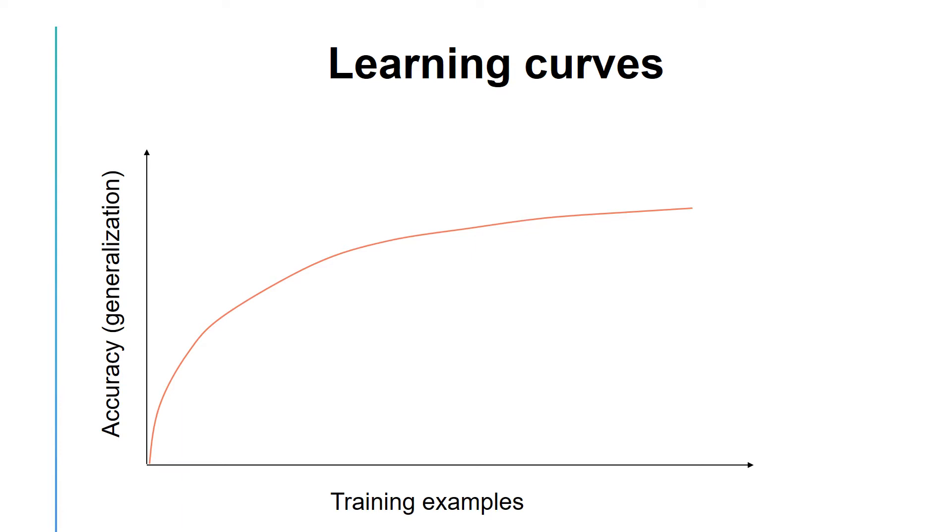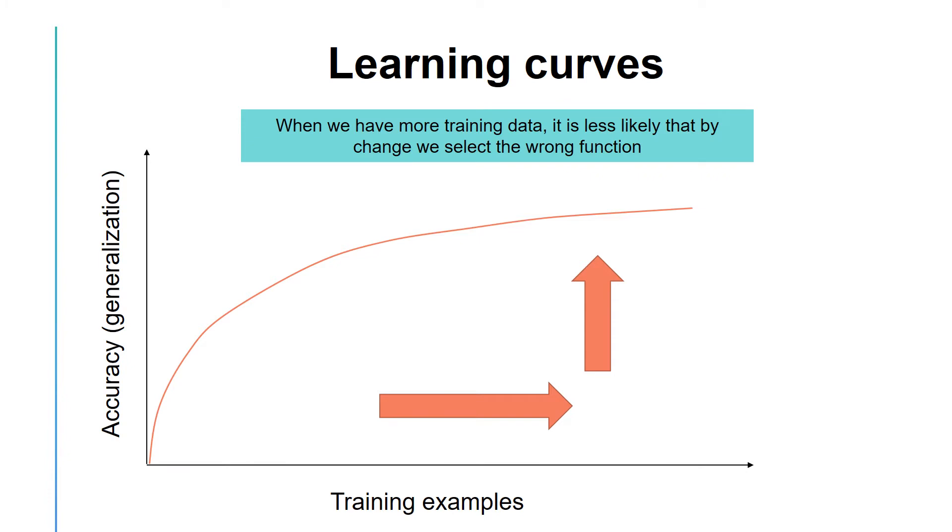As we increase the amount of data, the accuracy goes up because our model gets better at choosing the right function among the set of options. When we have more training data, it is less likely that we select the wrong function by chance.